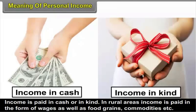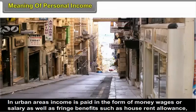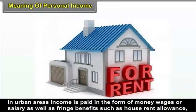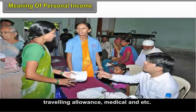Income is paid in cash or in kind. In rural areas, income is paid in the form of wages as well as food grains, commodities, etc. In urban areas, income is paid in the form of money wages or salary as well as fringe benefits such as house rent allowance, travelling allowance, medical aid, etc.